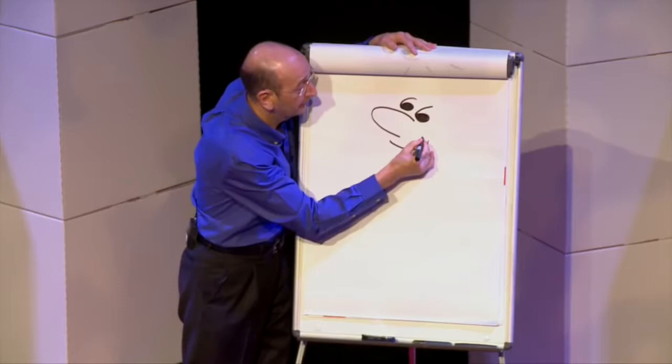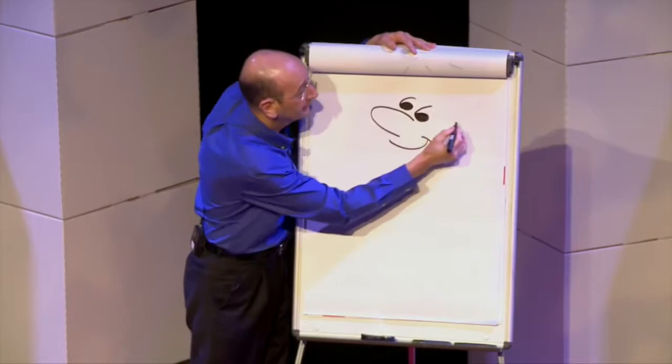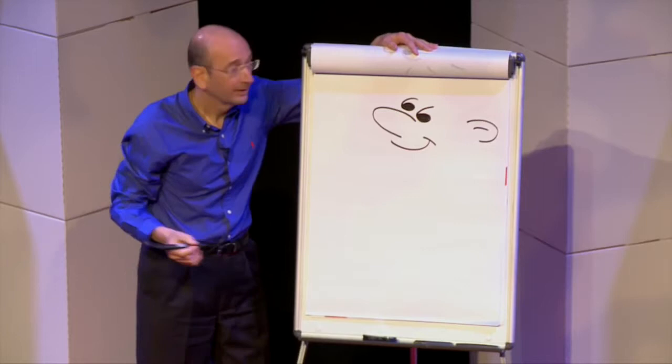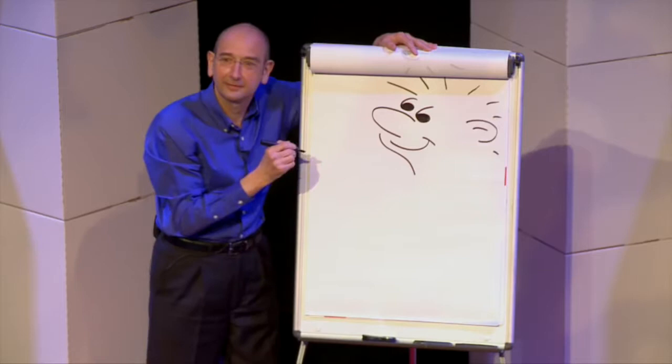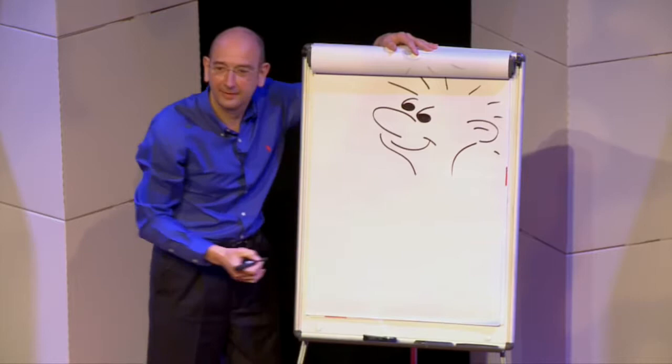Next, the mouth. Nice big smile. Now, over here, the ear. Next, some spiky hair. Next, put the pen to the left of the mouth. Little line like that. Pen under the ear. Drop a line like that.